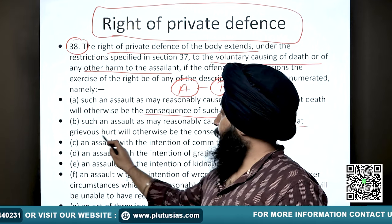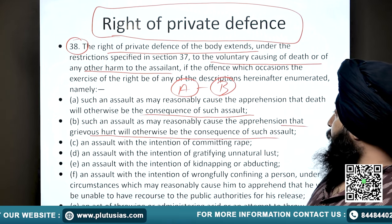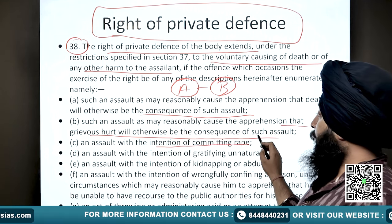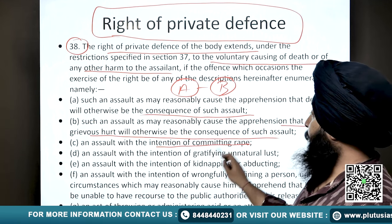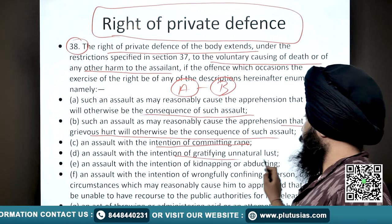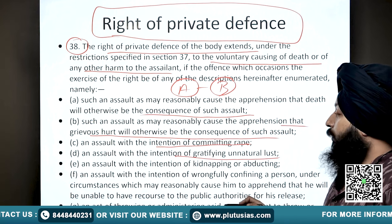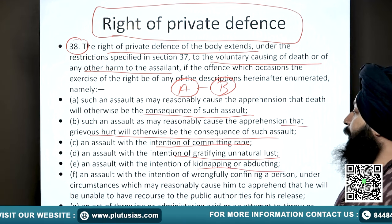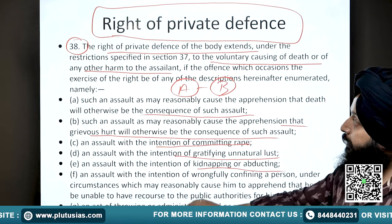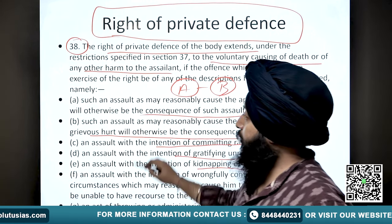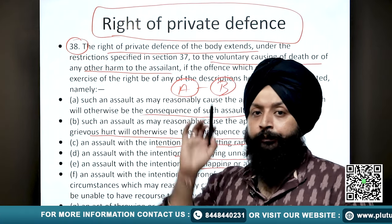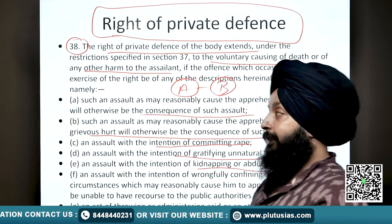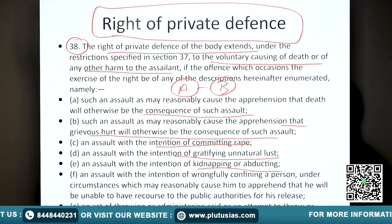There are many other provisions that give the right of private defense even to the extent of causing the death of the assailant - like any assault that causes an apprehension that grievous hurt will otherwise be the consequence, or if somebody is assaulting a woman with the objective of committing rape, or somebody is making an assault with the intention of kidnapping or abducting. In these scenarios the prospective victim can exercise his right of private defense.